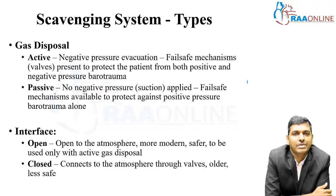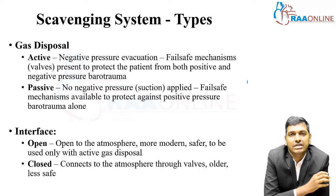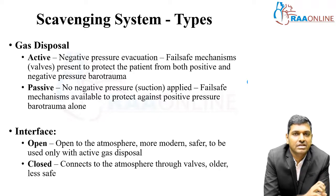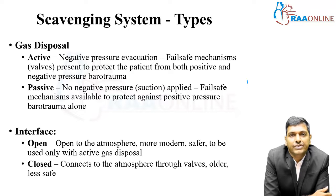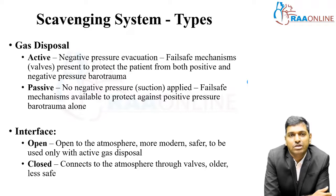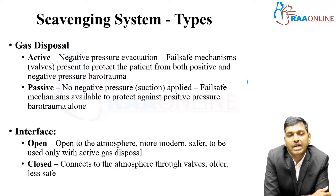Active gas disposal happens when you introduce a negative pressure evacuation. The scavenging system evacuates the agent using suction. Fail-safe mechanisms are present to protect the patient from both positive and negative pressure barotrauma because suction is involved. The patient can be subjected to positive and negative pressure barotrauma if the fail-safe mechanisms are not utilized.